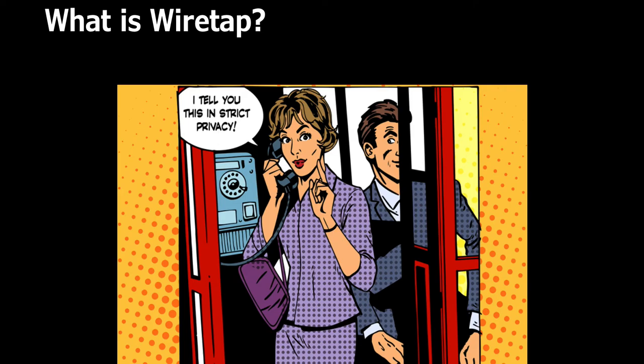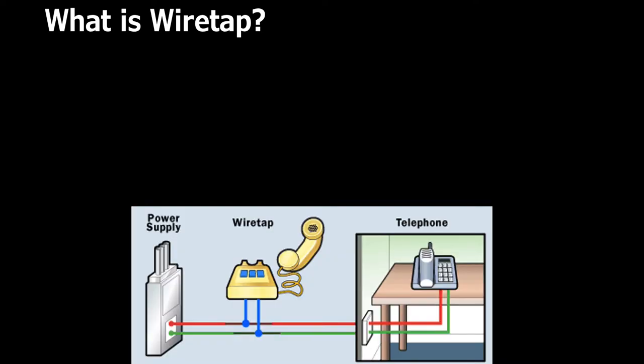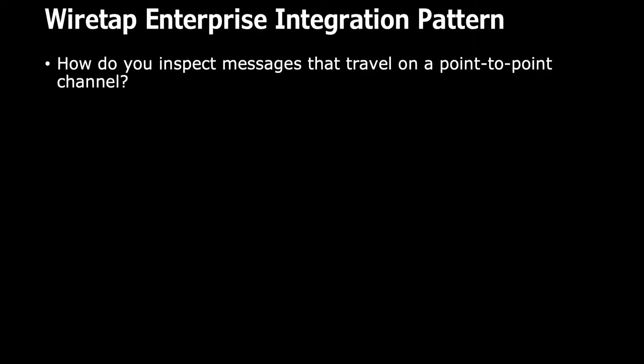Wiretap is a simple way of sneaking into somebody else's conversation without interrupting it — like cheeky listening to a private conversation. This concept typically came from the telephonic world, where a conversation is happening between two parties and somebody connects their own phone without the others being aware, basically not interrupting the ongoing conversation.